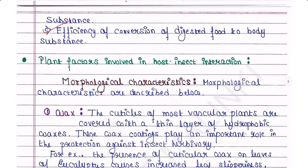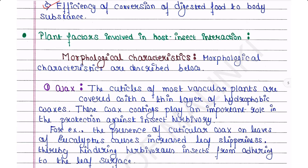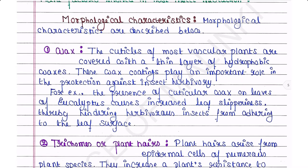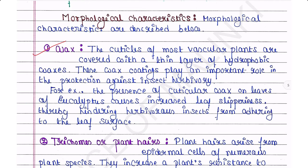Plant factors involved in host-insect interaction: morphological characteristics. First is wax — the cuticles of most vascular plants are covered with a thin layer of hydrophobic wax. These wax coatings play an important role in protection against insect herbivory.